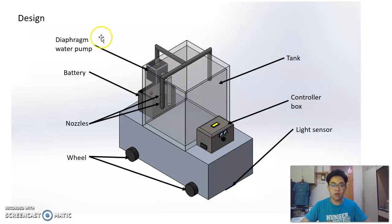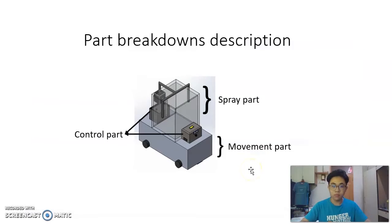And this is the design of our robot. So here is the diaphragm water pump, the battery, the nozzles, and four wheels, light sensors, controller box, and tank. So we break down our robot into a few parts: spray part, movement part, and control part.